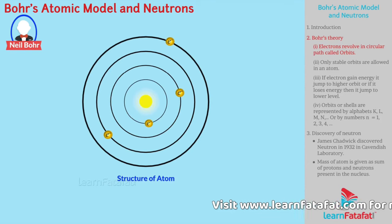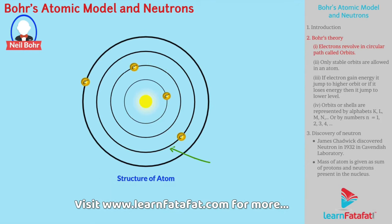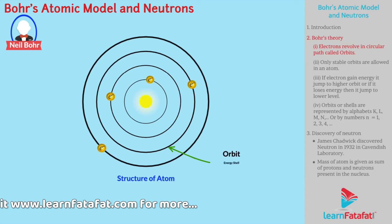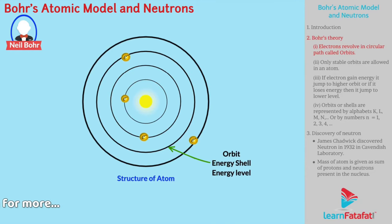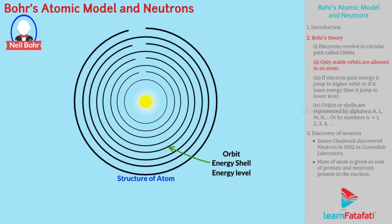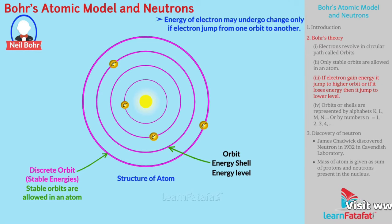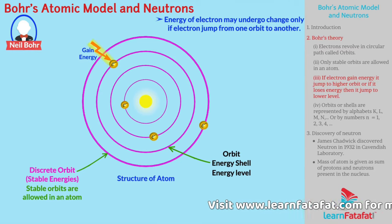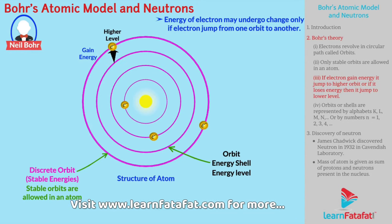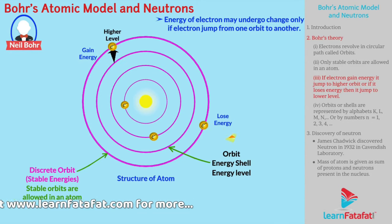According to Bohr's theory, electrons revolve in circular paths called orbits, or energy shells, or energy levels. There is a possibility of infinite orbits in an atom. However, in very few discrete — that is, distinct — orbits, electrons have stable energies. Therefore, only stable orbits are allowed in an atom. The energy of an electron may undergo change only if the electron jumps from one orbit to another. If an electron gains energy, it will jump to a higher orbit; if it loses energy, it will jump to a lower level.